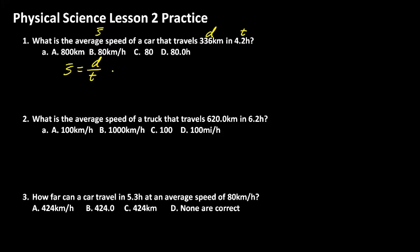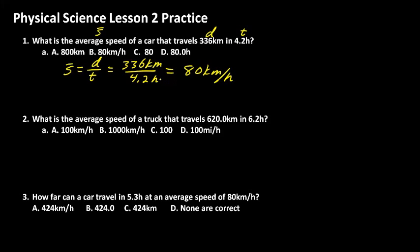If you use the velocity equation here, it wouldn't make any difference — you still get the same answer, and that's okay. So that equation becomes distance, 336 kilometers, divided by the time, 4.2 hours. And it looks like the answer works out to be 80 kilometers per hour. And that's the answer to the first question.